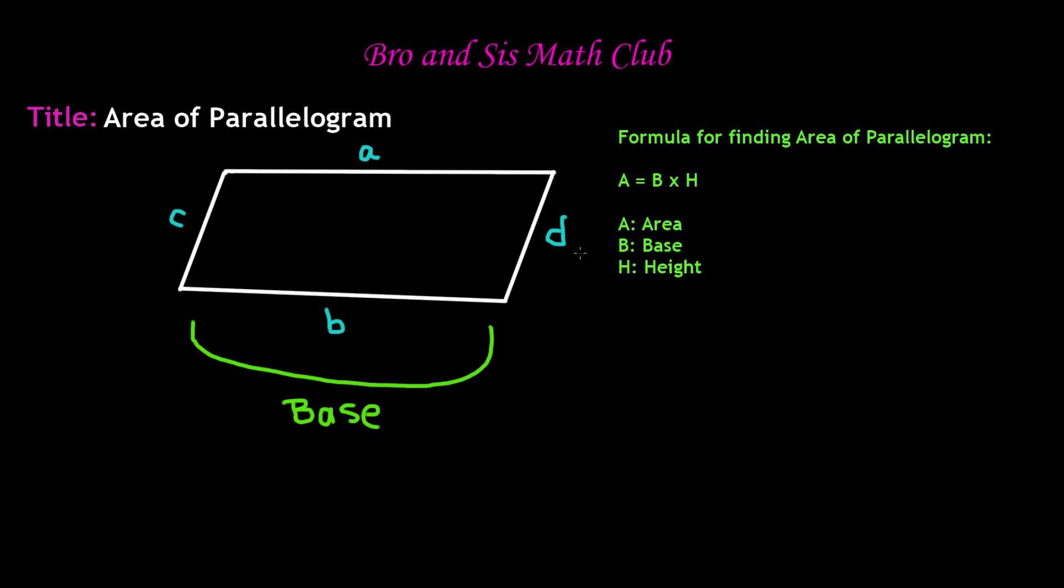So what we have to do is we look at this point right over here, and we draw a straight line down. So we're going to draw a straight line down over here so that this makes a 90 degree angle.